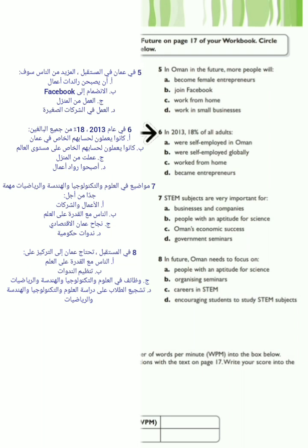Question 6: In 2013, 18% of all adults — A. Were self-employed in Oman, B. Were self-employed globally, C. Worked from home, D. Became entrepreneurs.